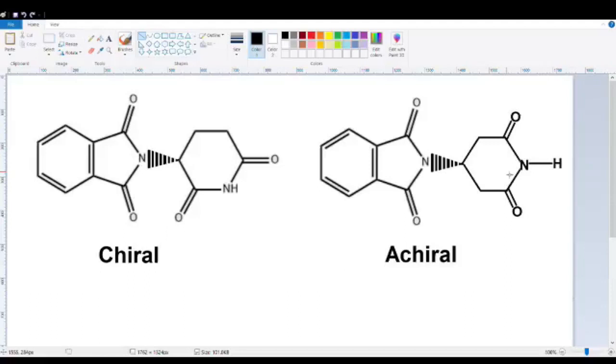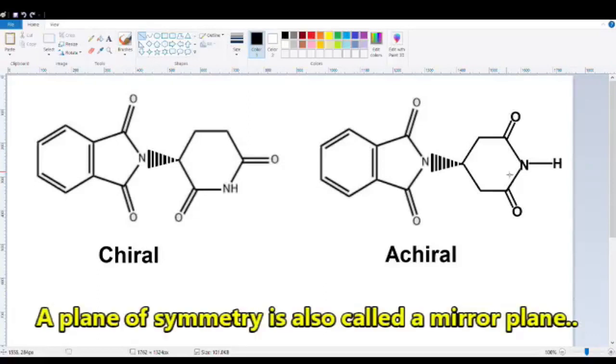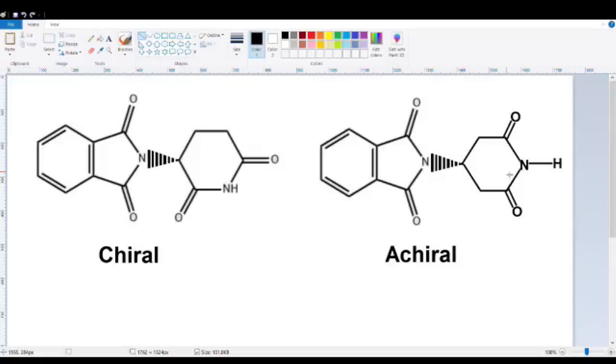Now there's a much simpler test that you can do, and that is called looking for a plane of symmetry in the molecule. If you can draw a line through the molecule around which the molecule is symmetrical, you know that molecule is achiral. So for this one, we can draw a line just like this and take a look. In this molecule, it is symmetrical on both sides of this line. There is a plane of symmetry through this molecule. So it is achiral.